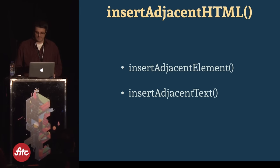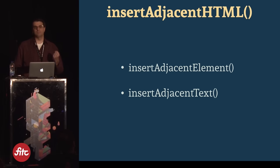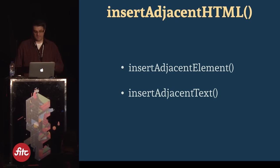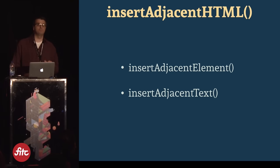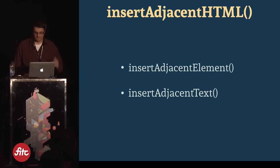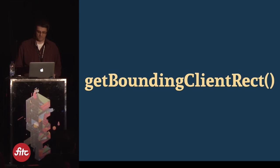There are also two related methods: insertAdjacentElement and insertAdjacentText. With insertAdjacentElement you can create an HTML element on the fly and insert it as an element rather than a string of HTML. With insertAdjacentText you insert a string of text — even if you put HTML in there, it would render escaped on the page, meaning you'd see the angle brackets.